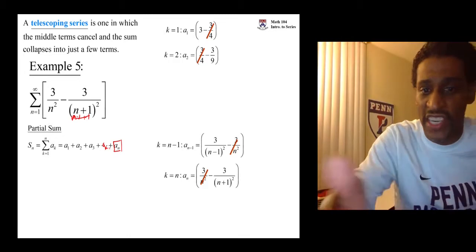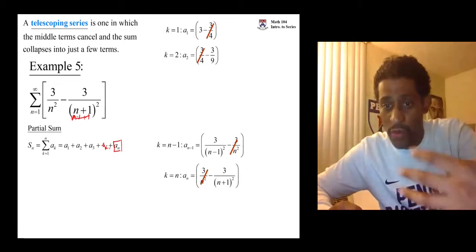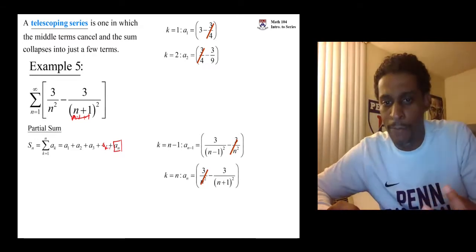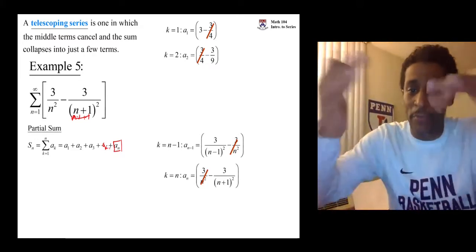And we end up with just an n squared. And so that 3 over n squared cancels with the 3 over n squared that's in the end term. The same cancellation that happens, it gets mimicked at the end.